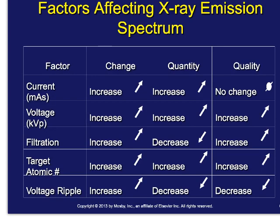This is illustrated on page 172. Figure 10-14 shows that as we double the mAs, we double the quantity of X-rays produced, but the curve stays exactly the same shape. With kVp, as we increase it, we've actually shifted the average beam energy. The same kind of shift in average beam energy happens with filtration. Regarding target atomic number, tungsten has Z = 74, and if we go up to gold at Z = 79, we would expect to see an increase in both the quantity and quality of X-rays produced.